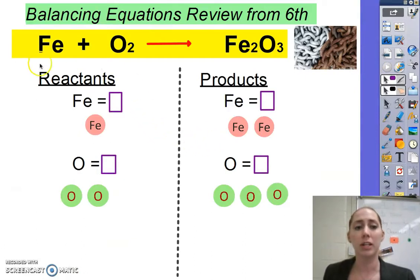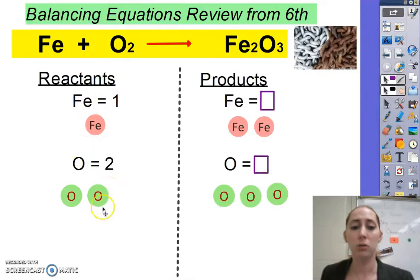This is a review also from sixth grade. Here we've got the equation for iron rusting. To figure out how many of each atom we have, we look at the coefficient and the subscript and multiply them together. For iron here, we have an invisible one and an invisible one, so we have one iron atom on this side. We have two oxygen atoms. Here we have two iron atoms on our product side. And oxygen, we've got three oxygens. But if you look, the amount going in does not equal the amount going out.